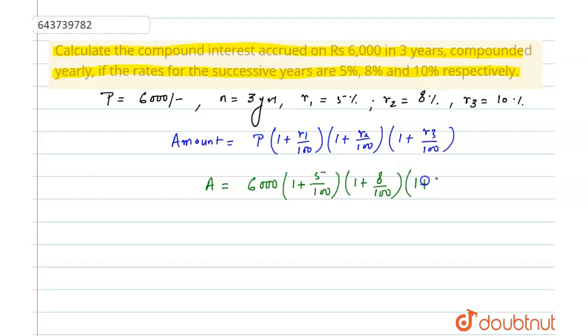After solving this equation, we will get 6,000 times 21 by 20 times 27 by 25, and lastly we will get 11 by 10.